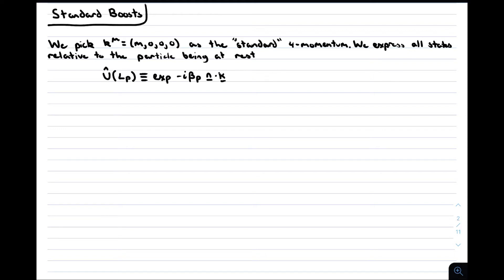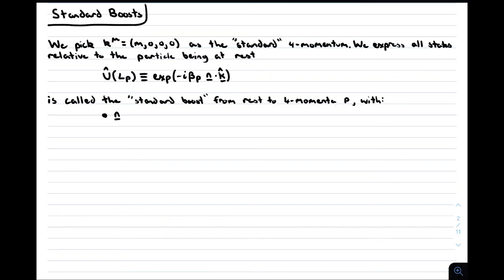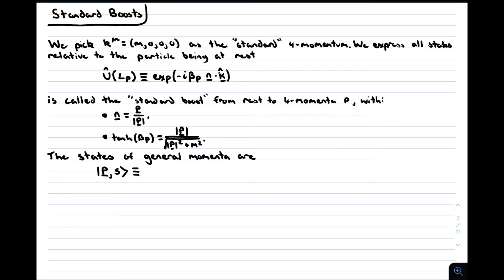We choose a boost, which we label L(p), as a simple boost with no rotational component. The operator representation of this is the exponential of β_p n̂·K, where K is the vector of boost generators and n̂ is the unit vector in the direction of the three-momentum, and β is the rapidity that leads to a boost by the correct velocity. However, we must be careful to remember that we defined our Lorentz transformations passively, so a boost in the z direction would actually lead to the particle's three-momentum being in the negative z direction, which is why there is also a minus sign in the exponential. The choice of the rest frame as the reference frame and the choice of a simple boost for each four-momentum are entirely conventional, but by far the most natural choices — any other choice would massively complicate the entire analysis. We then define a state with general momentum p as being the standard Lorentz boosted state |p, s⟩. This is the definition of how the labels s are related for different momenta.